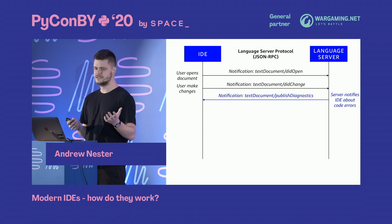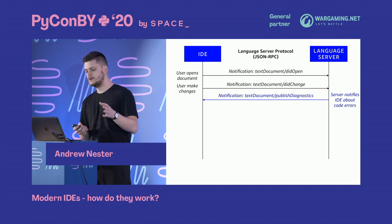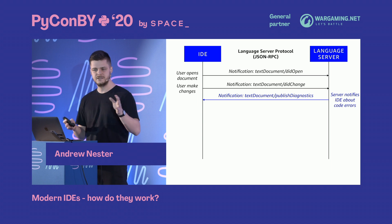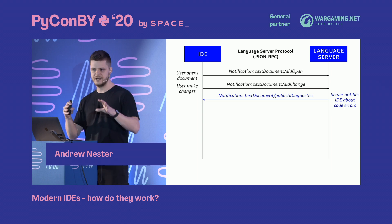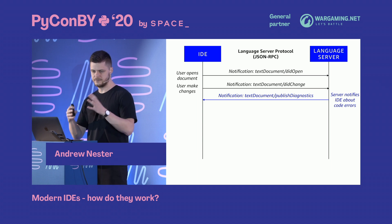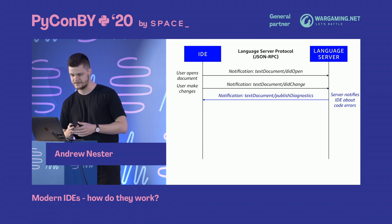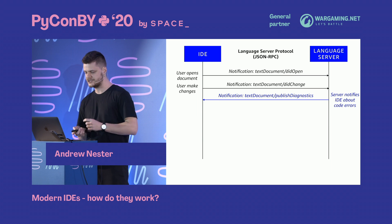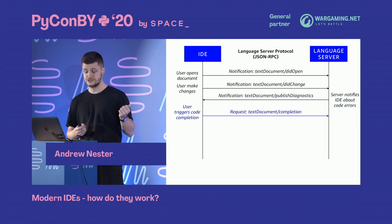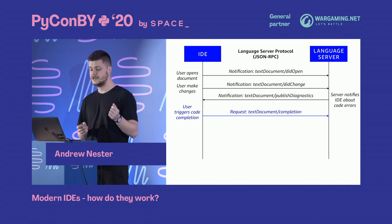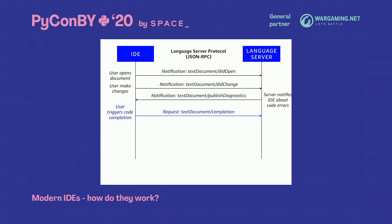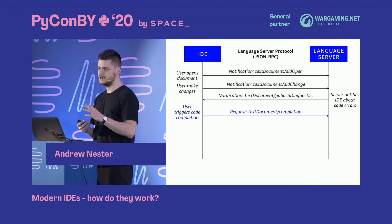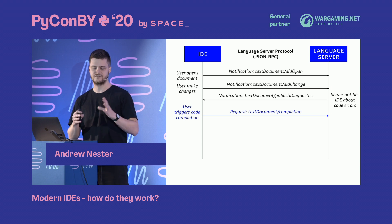When the language server receives a change notification, it reindexes and checks for errors, then sends a notification back to the IDE called 'publish diagnostics.' Diagnostics means errors, warnings, quick fixes — essentially information about the status of your project. This happens on every change, so it's a two-way communication. When the user wants to trigger code completion, the IDE sends a request — not just a notification — because it needs to wait for a response.